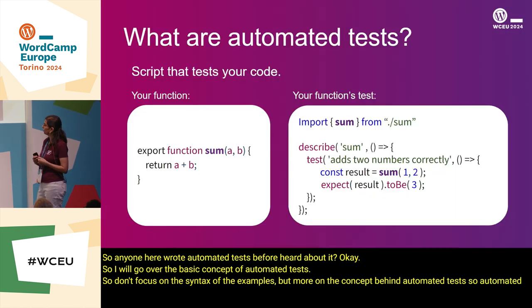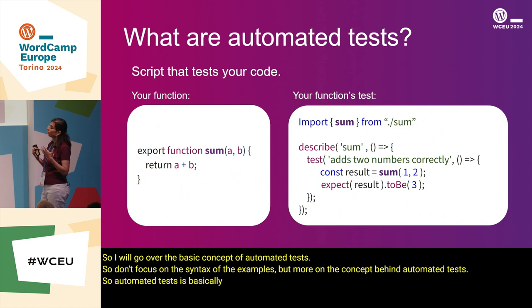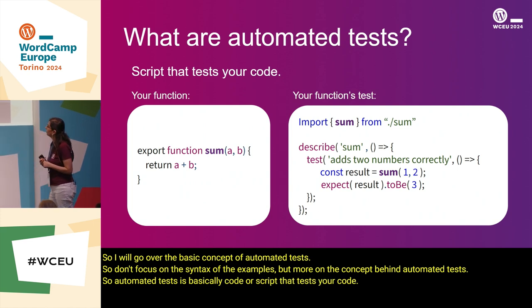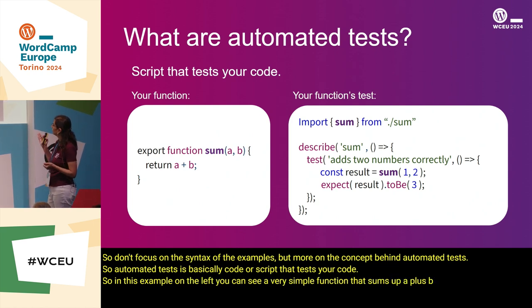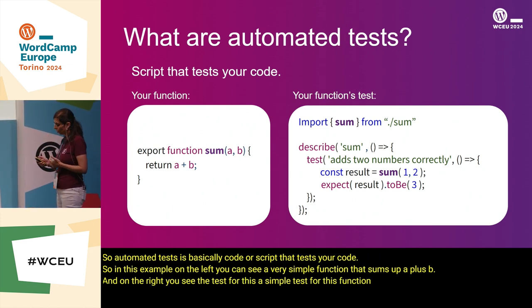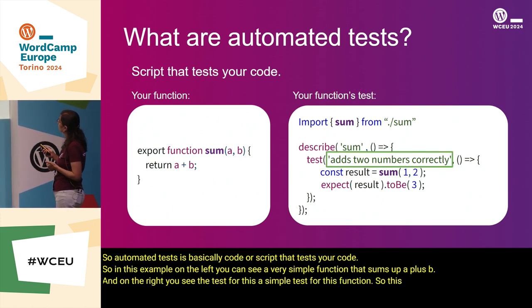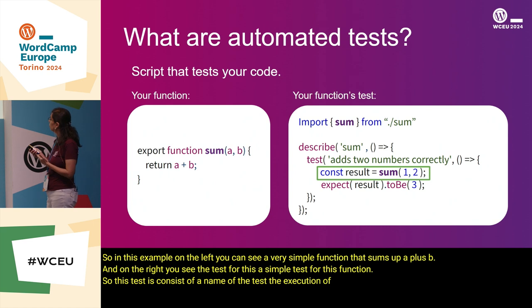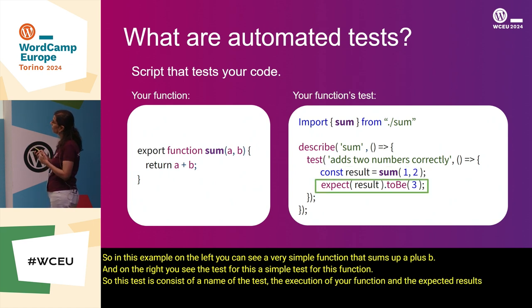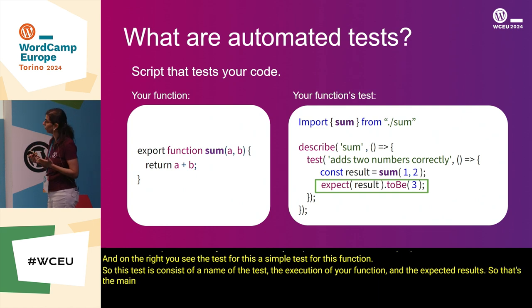Automated tests is basically code or script that tests your code. In this example, on the left you can see a very simple function that sums up A plus B. And on the right, you see a simple test for this function. This test consists of a name of the test, the execution of your function, and the expected results. That's the main essence of automated tests.